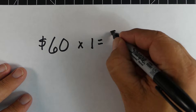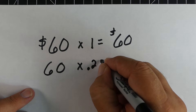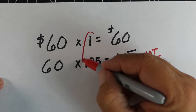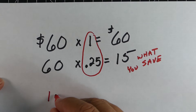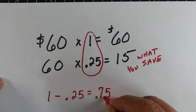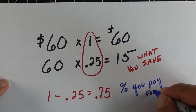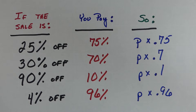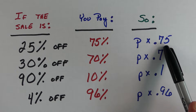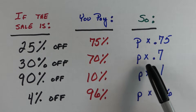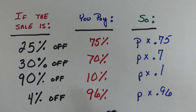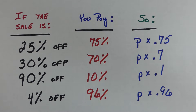We know that 60 times 1 equals 60 — that's the whole amount, or 100%. If we take 60 times 0.25 we get the 15, which is what we save. So if you take the whole amount (1.00) minus 0.25 (what we're saving), that gives you 0.75, or 75% — which is what you have to pay. Quick examples: 25% off means you pay 75% (times 0.75); saving 30% means you pay 70% (times 0.7); saving 90% means you pay 10% (times 0.1); saving 4% means you pay 96% (times 0.96).